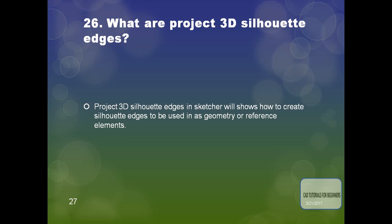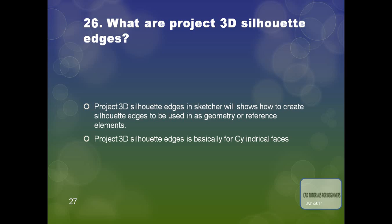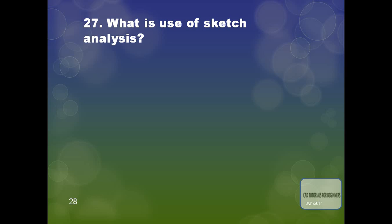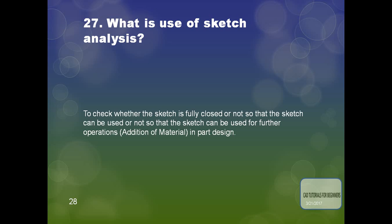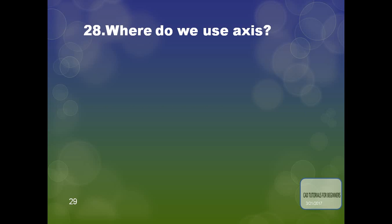The next question is: what are the Project 3D Shell Out Edges? In the sketcher, this shows how to create shroud edges to be used as geometry or reference elements — basically this is for cylindrical faces, while for rectangular faces we directly use Project 3D Elements. The next question is: what is the use of Sketch Analysis? It is used to check whether the sketch is fully closed or not, so that the sketch can be used for further operations such as adding material in part design.